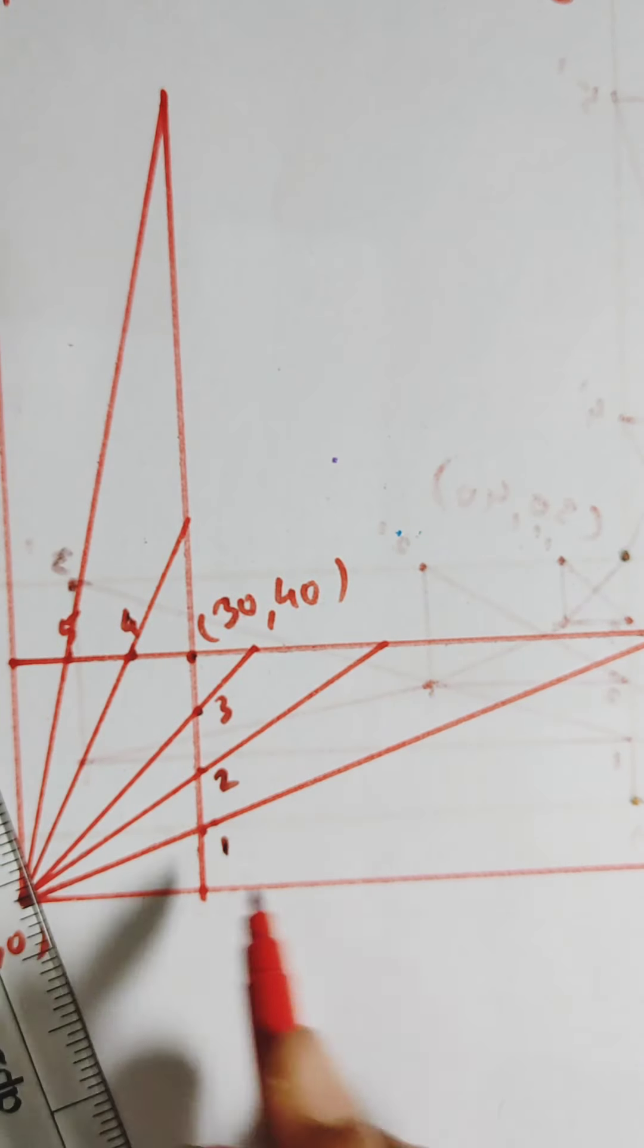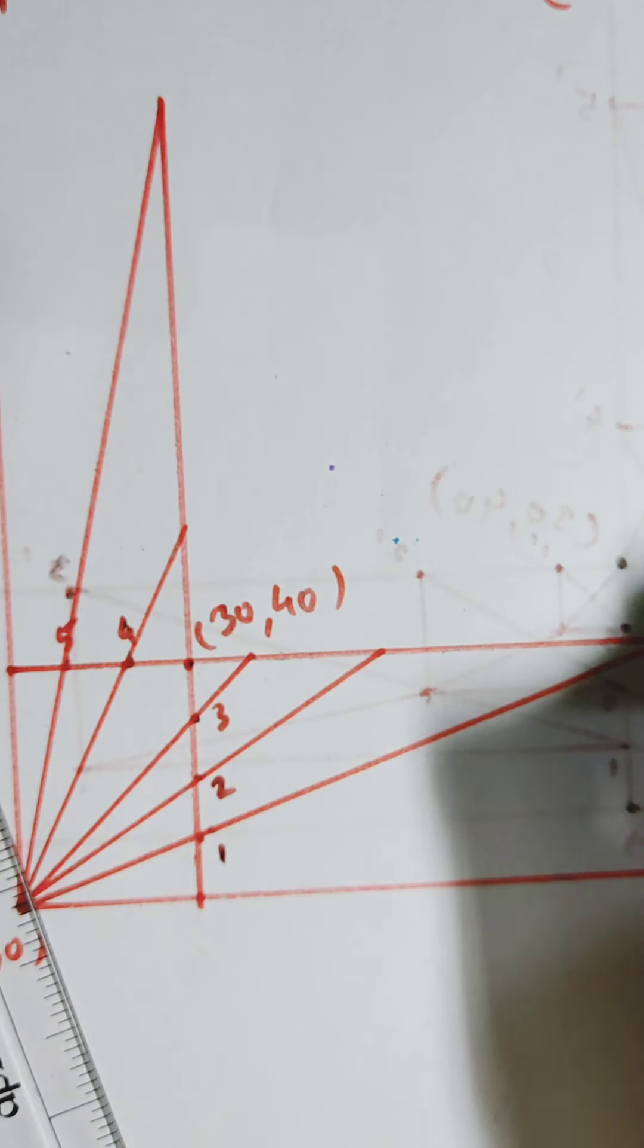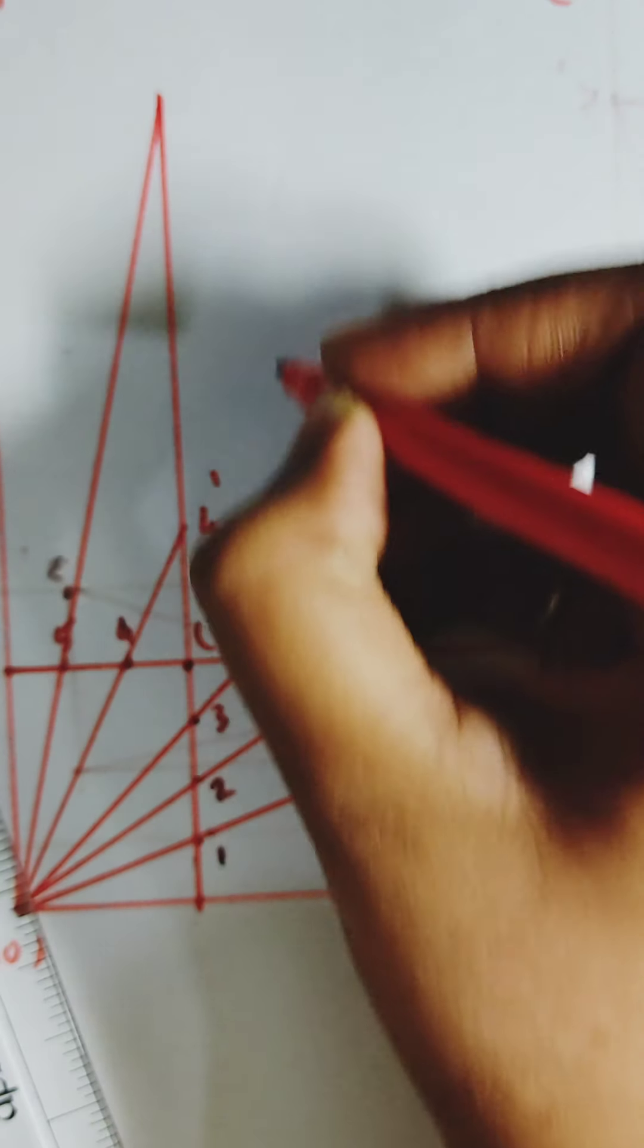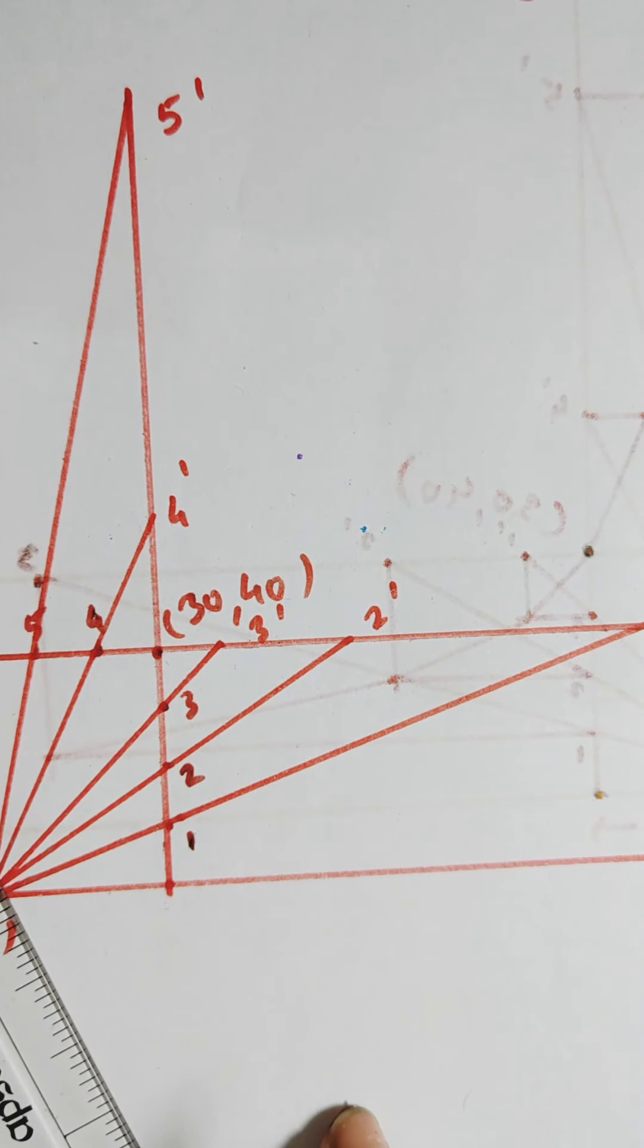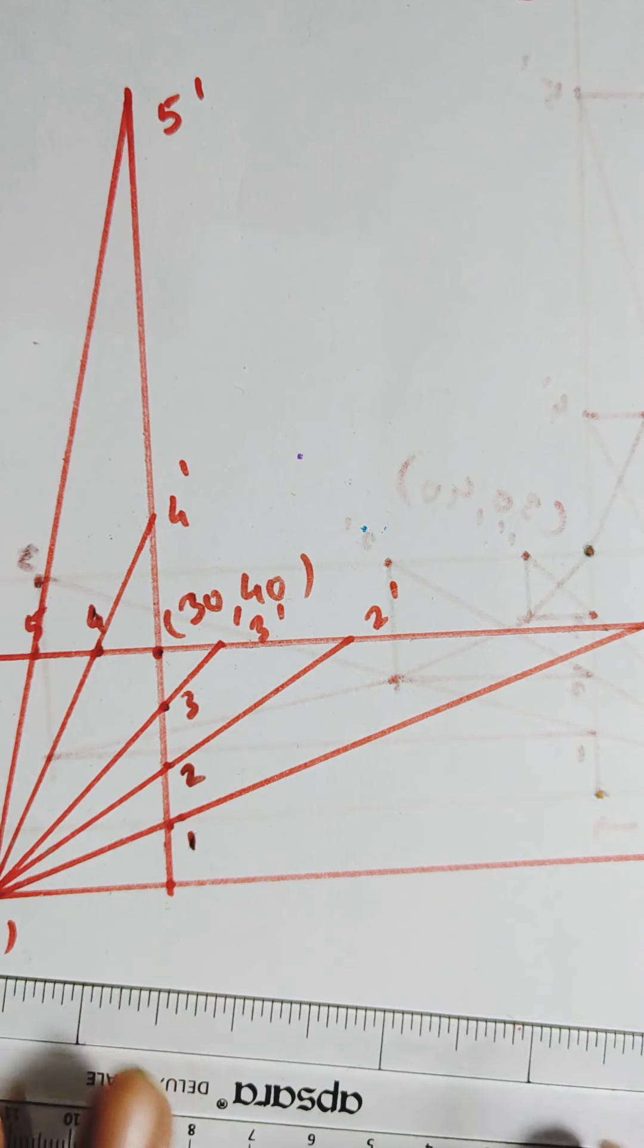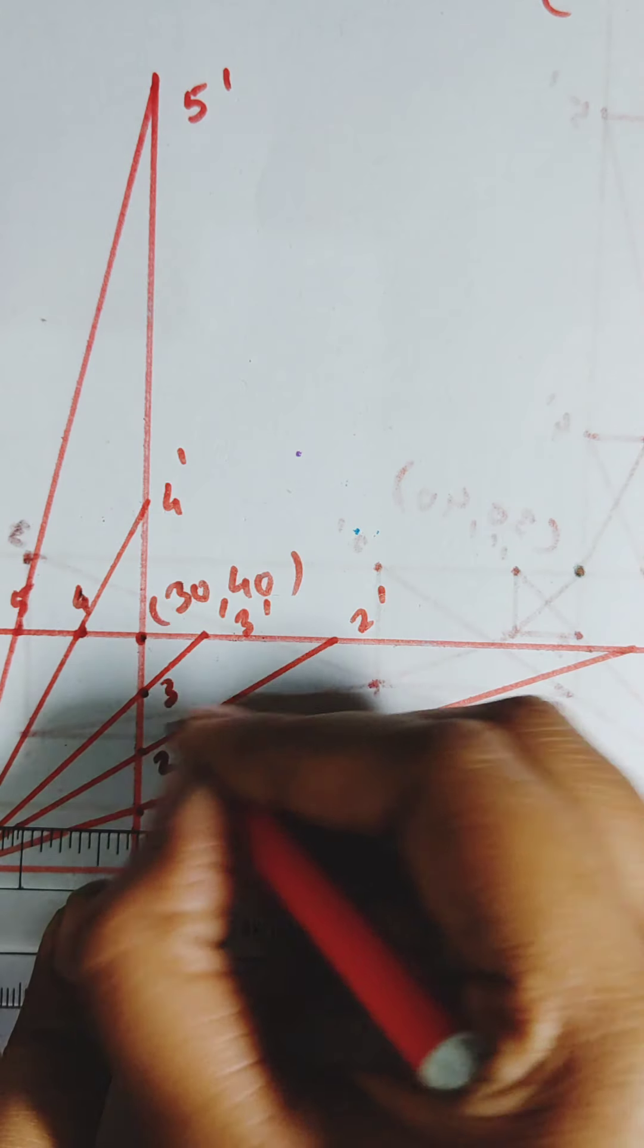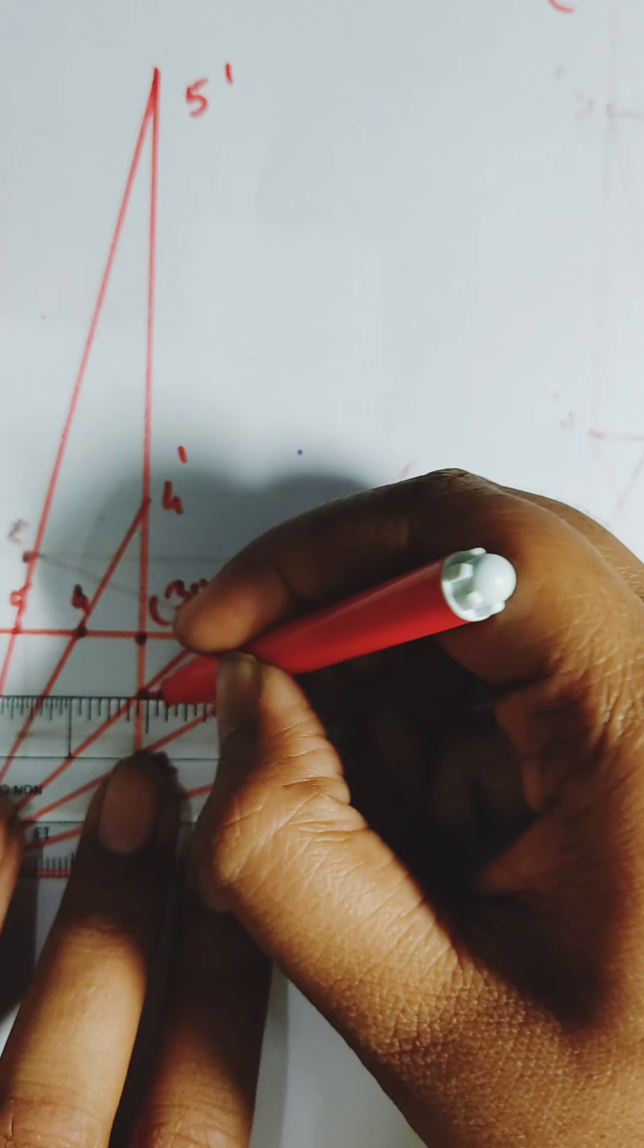Again, this is a primary thing that we need to do. I am naming it 1 dash, 2 dash, 3 dash. You have 4 dash and 5 dash. Now, I am going to draw a vertical line and horizontal line from each of these points. Like this. Watch.